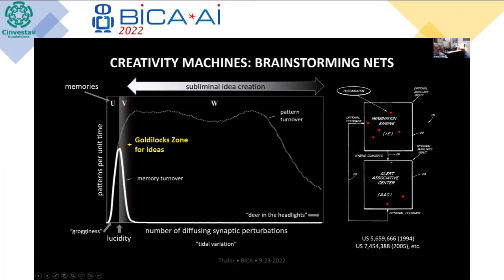That was the inspiration for the neural network architecture I patented back in 1994. It consists of at least two networks — one is a generator, the other is a discriminator or critic — and each has the ability to trigger reinforcement learning within the other. What results, without going into great detail, is essentially a brainstorming session between these two nets in which ideas are generated, refined, and then selectively strengthened within what I call the imagination engine. It becomes an associative memory for new ideas.